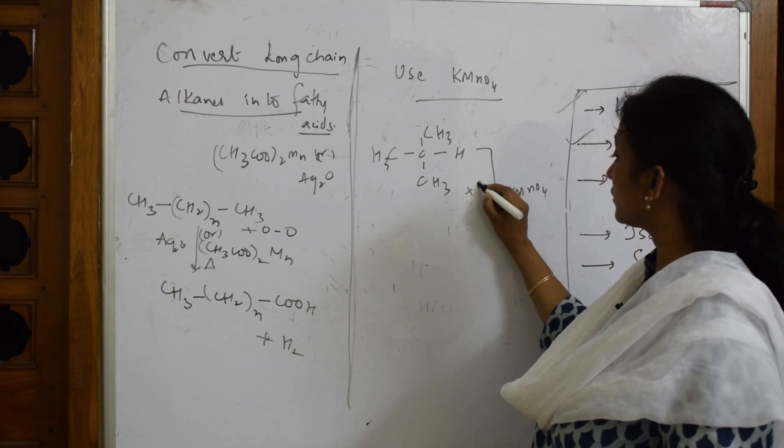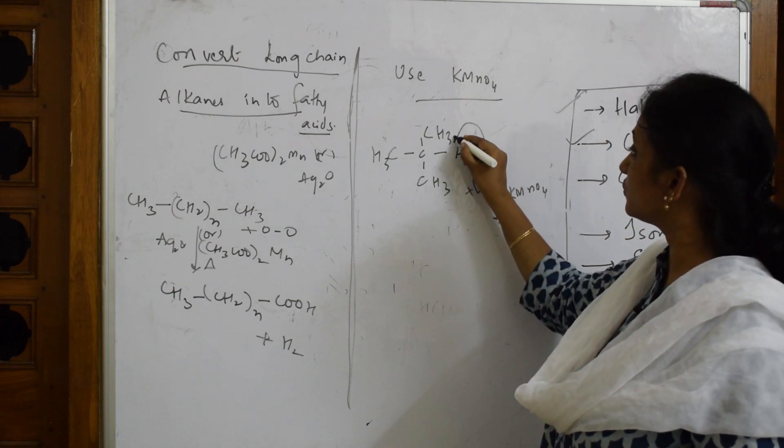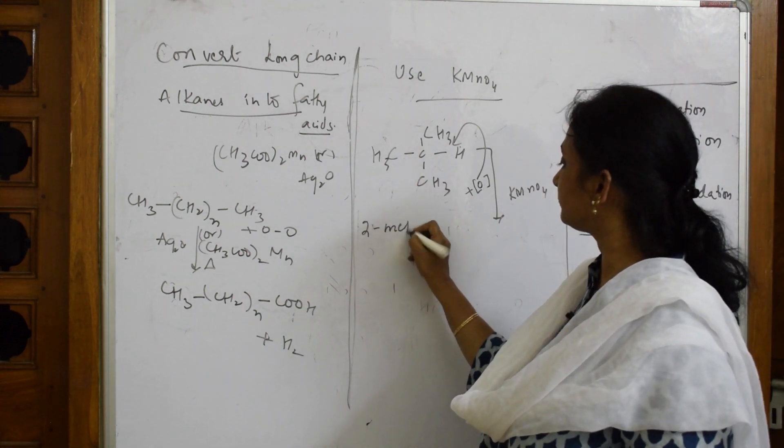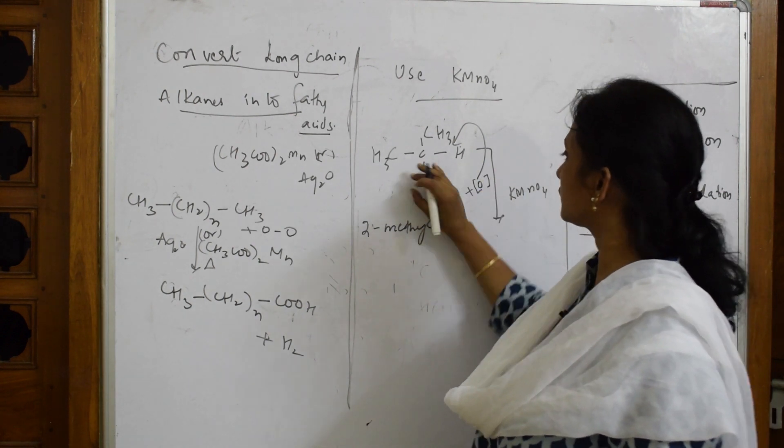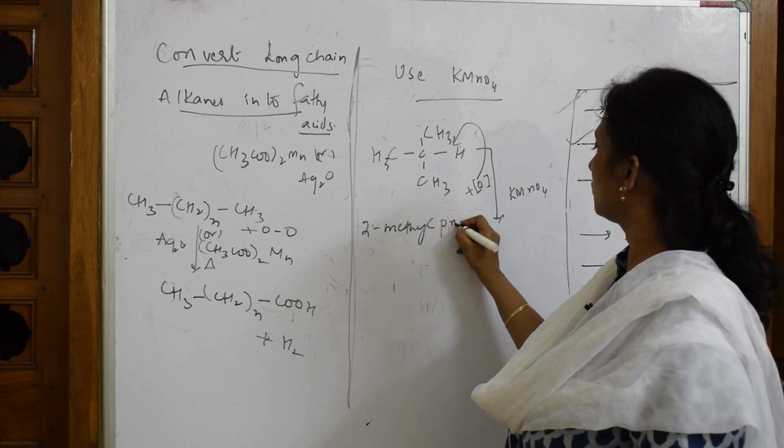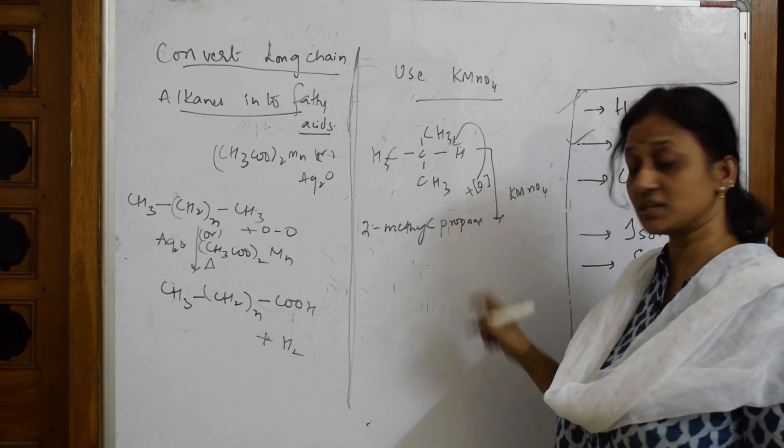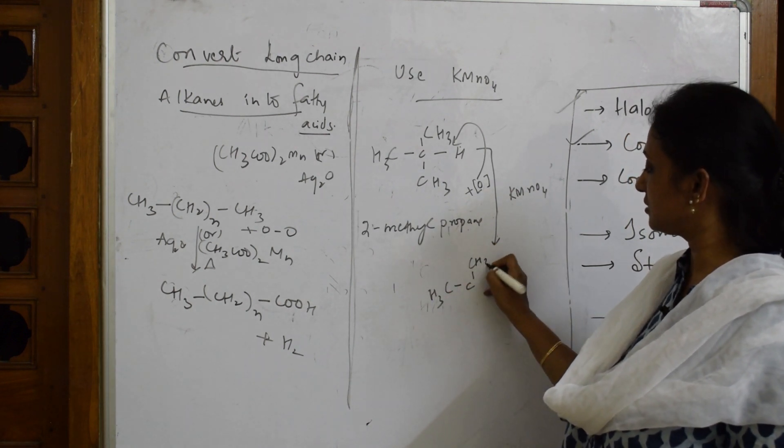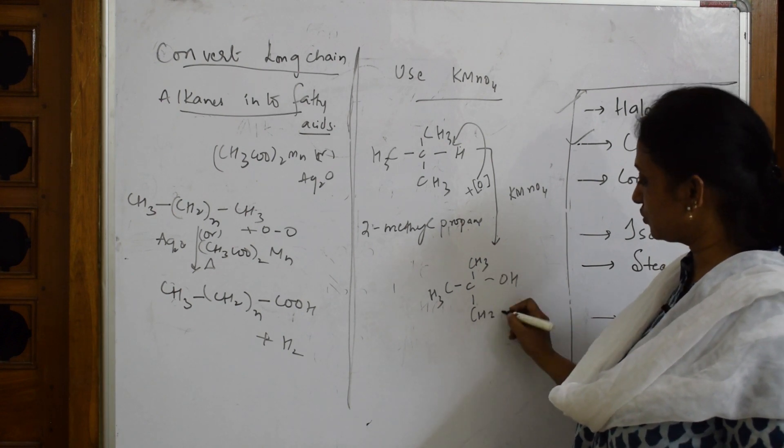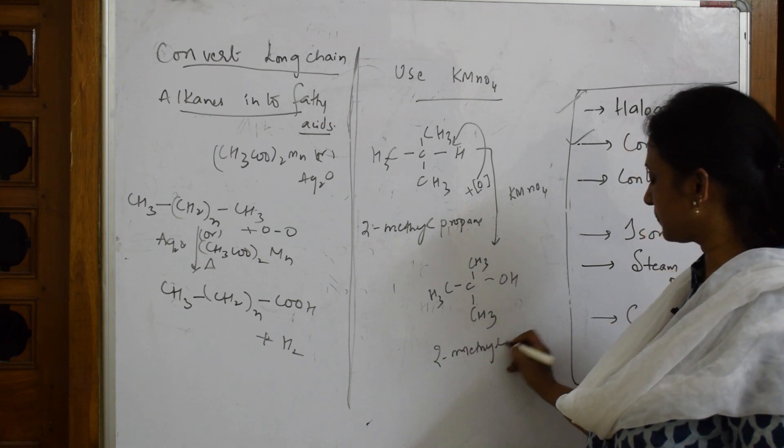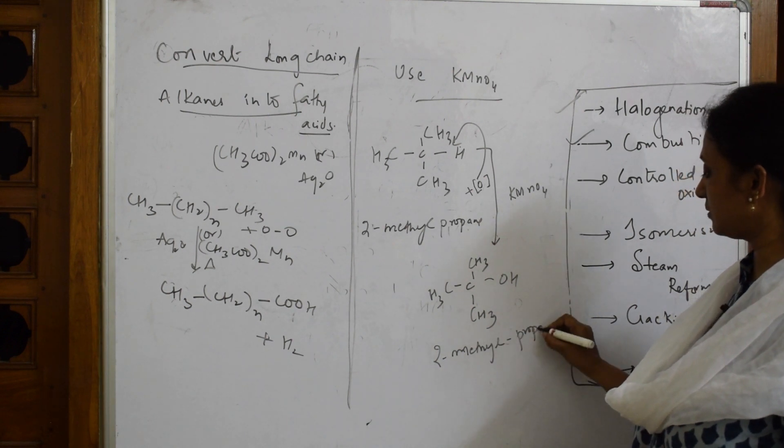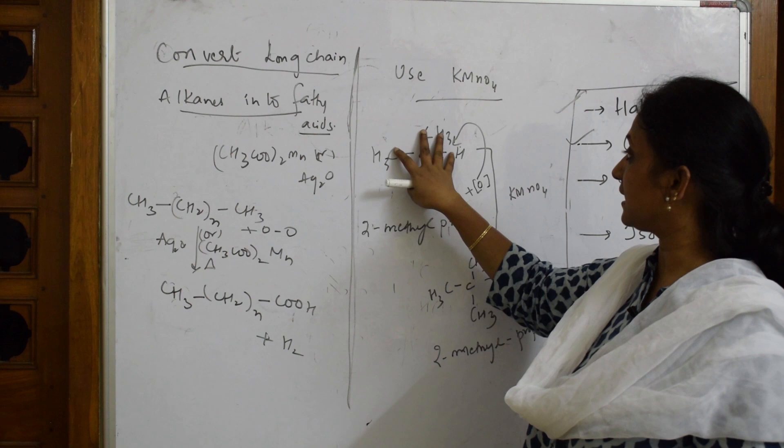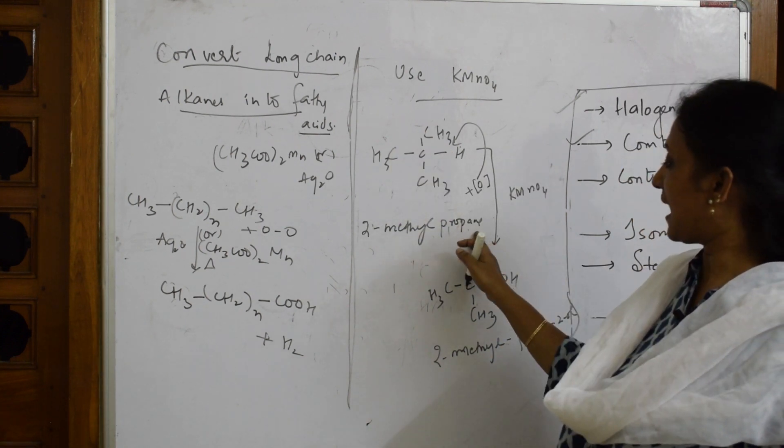Here, I am going to use K-permanganate as an oxidizing agent. Oxidation process - I am going to add nascent oxygen here. This compound is 2-methylpropane. This oxygen goes and adds to this hydrogen in presence of K-permanganate. What do I get? CH3C(CH3)2CH3 plus nascent oxygen becomes 2-methylpropan-2-ol. What is happening here? We are taking alkane in the presence of oxidizing agent, we are getting alcohol. Alkanes to alcohol.